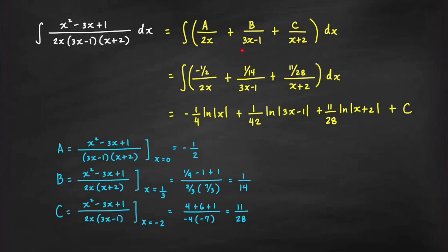To find constant b, cover the 3x minus 1 in the integrand and evaluate at x equals 1 third, which makes that factor zero. Plugging in x equals 1 third, we get 1 over 9 minus 1 plus 1 in the numerator, over 2 thirds times 7 thirds. This simplifies to 1 over 9 divided by 14 over 9, which equals 1 over 14.